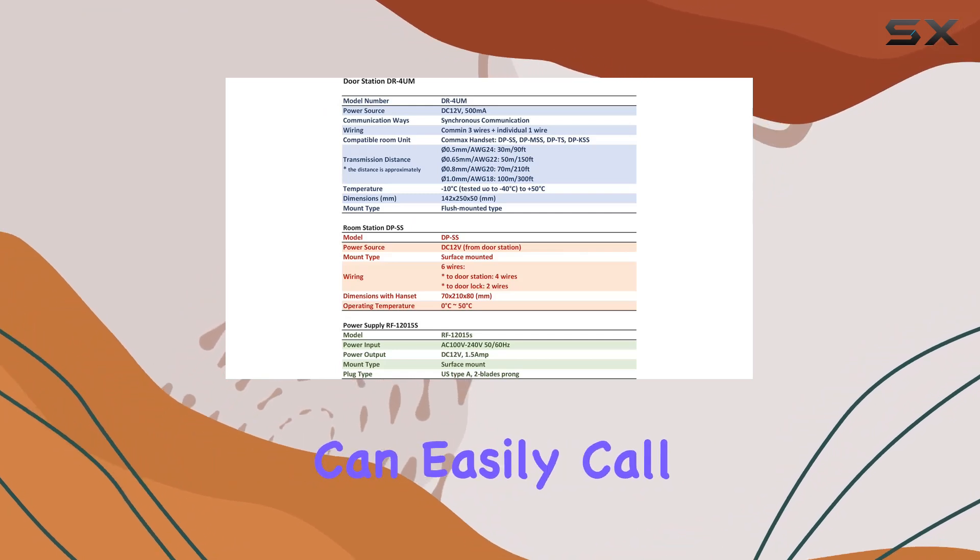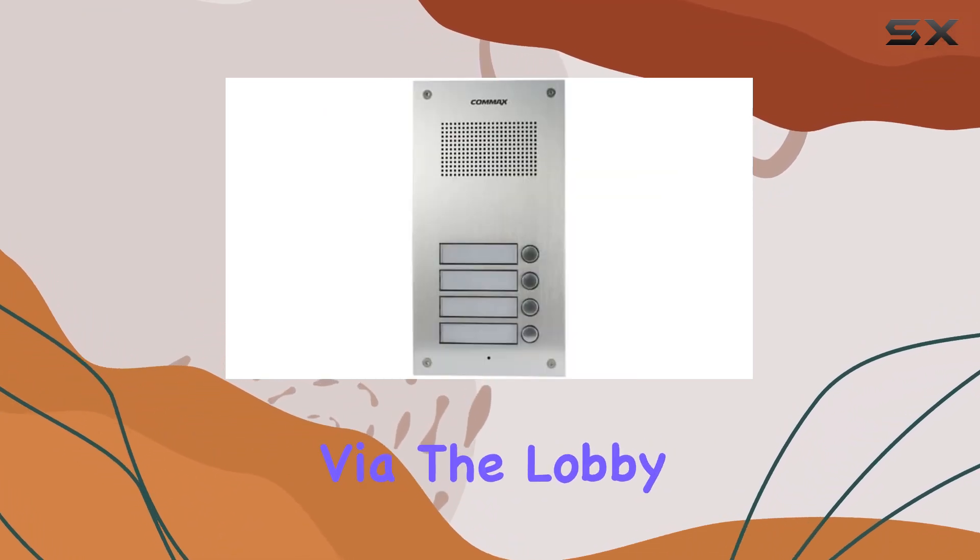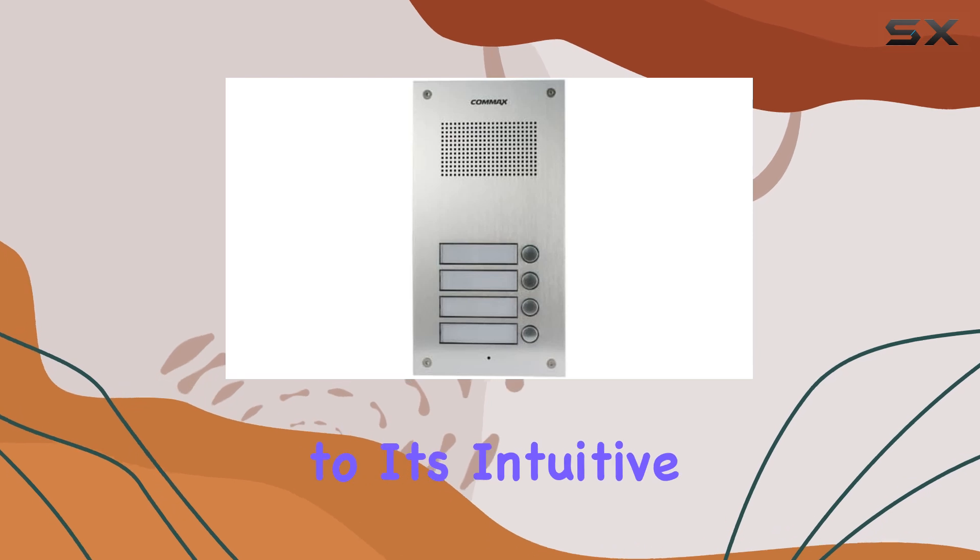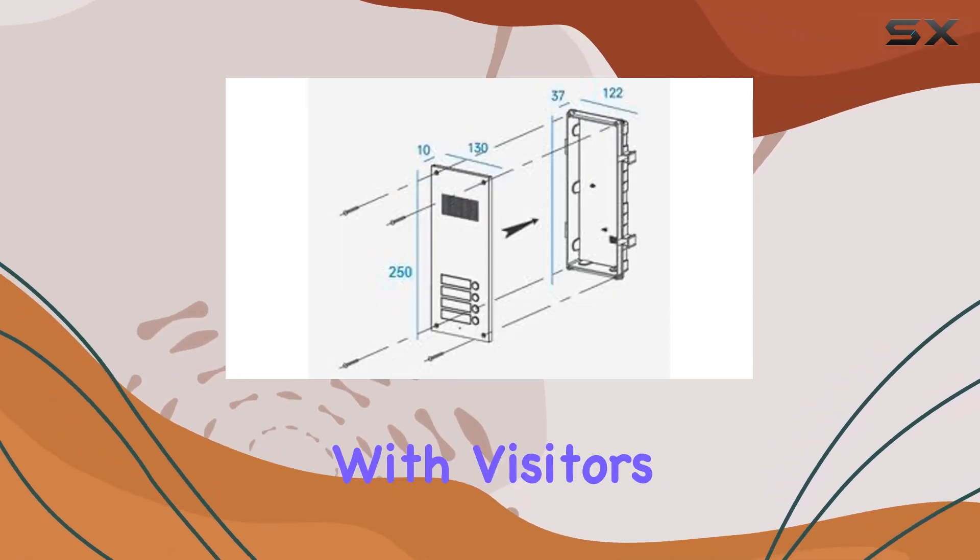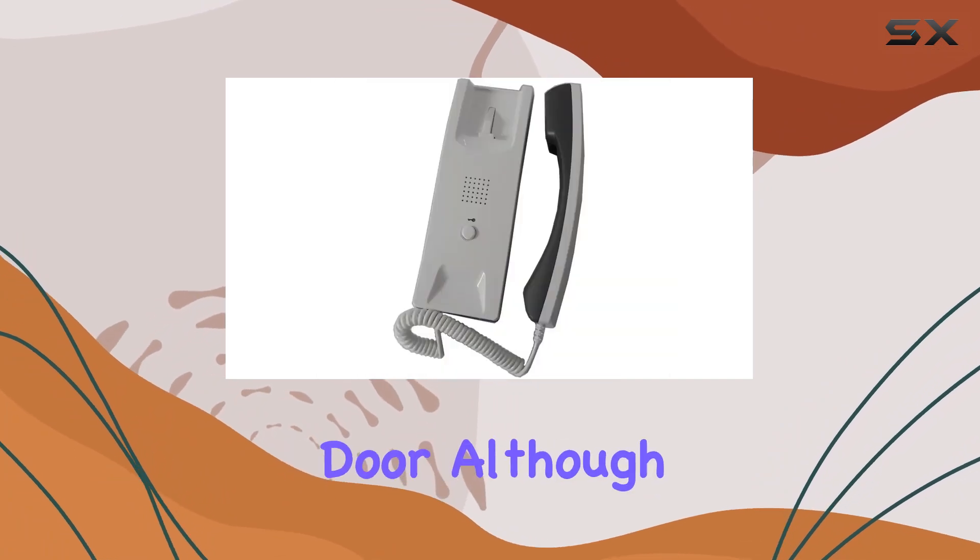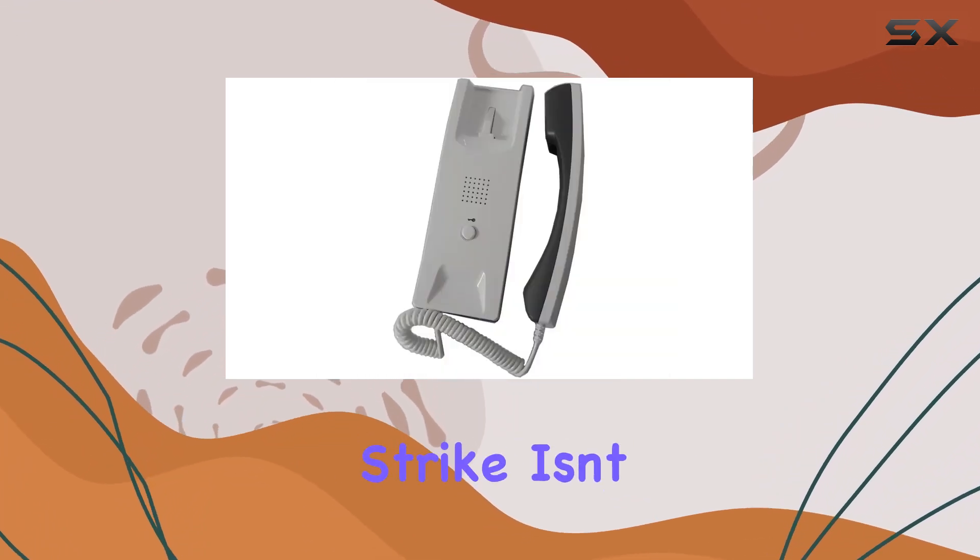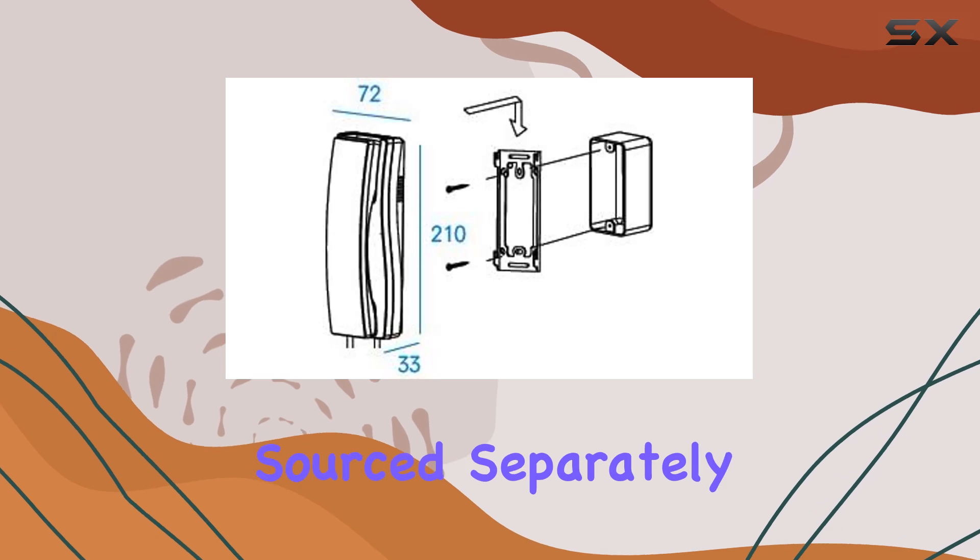Functionality-wise, each apartment can easily call and communicate with visitors via the lobby unit, thanks to its intuitive four-button interface. The interphones allow residents to converse with visitors and conveniently release the door, although it's worth noting that a door strike isn't included and needs to be sourced separately.